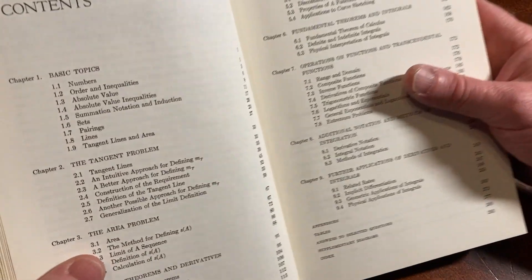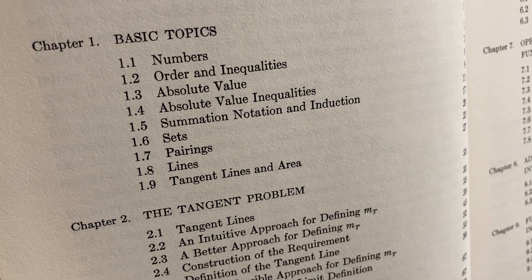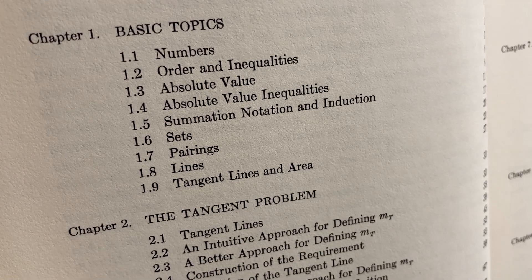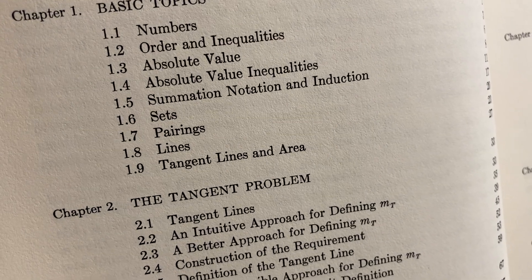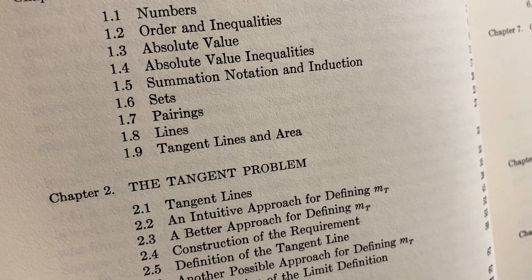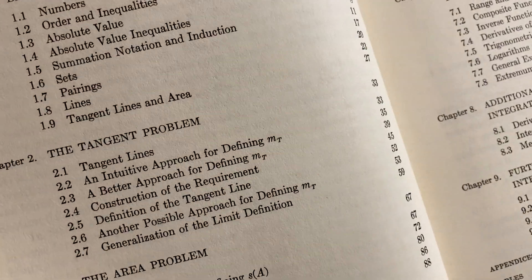All right. Let's just jump to the contents. See what we got. Contents. Here we go. Chapter 1. Basic Topics. So, numbers. Order and inequalities. Absolute value. Very important. Absolute value inequalities. Summation, notation, and induction. Sets, pairings, lines. That's a lot of stuff. Tangent lines and area. I mean, that's a lot of content. Quite a bit. 27 pages.